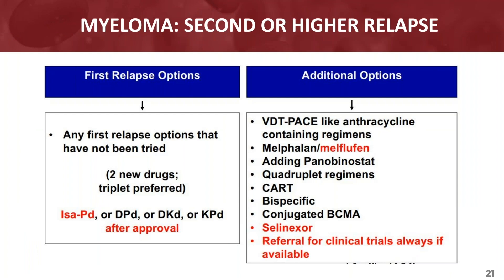I've flipped forward to slide 21, which includes some of these additional options, including selinexor and isatuximab-POM-dexamethasone, which was recently approved. I don't know if there can be any added comments about these additional options.